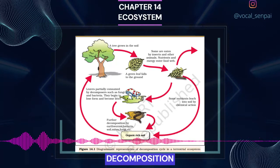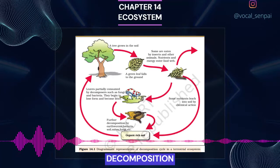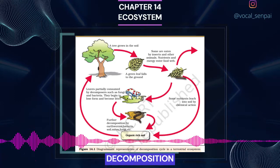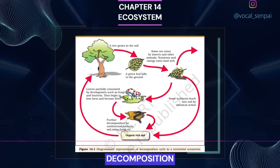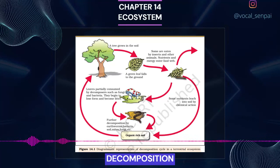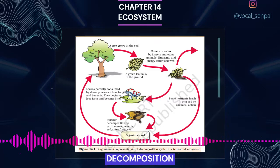Humification and mineralization occur during decomposition in the soil. Humification leads to accumulation of a dark-colored amorphous substance called humus that is highly resistant to microbial action and undergoes decomposition at an extremely slow rate. Being colloidal in nature, it serves as a reservoir of nutrients. The humus is further degraded by some microbes and release of inorganic nutrients occurs by the process known as mineralization. Decomposition is largely an oxygen-requiring process. The rate of decomposition is controlled by chemical composition of detritus and climatic factors. In a particular climatic condition, decomposition rate is slower if detritus is rich in lignin and chitin, and quicker if detritus is rich in nitrogen and water-soluble substances like sugars.